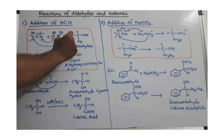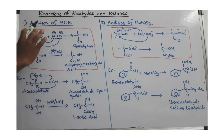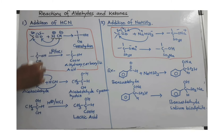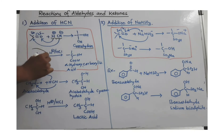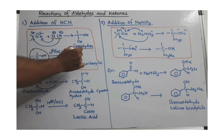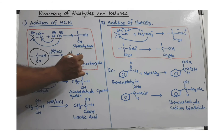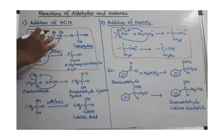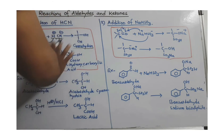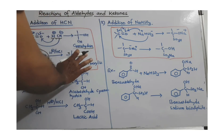So we get an addition product — this is an addition reaction. This addition product is called cyanohydrin, which is a very useful compound. On hydrolysis, it gives an alpha-hydroxy carboxylic acid, because this is the alpha carbon and there is a hydroxyl group on it.